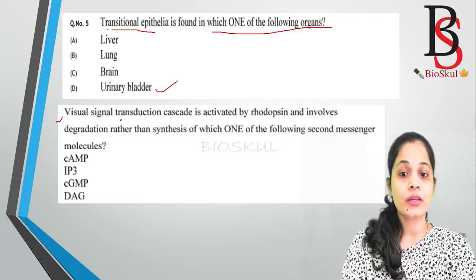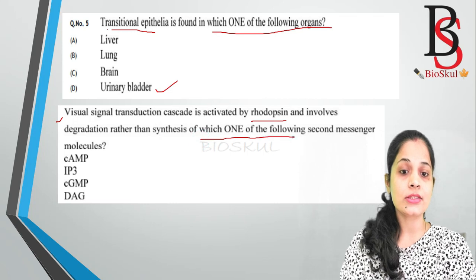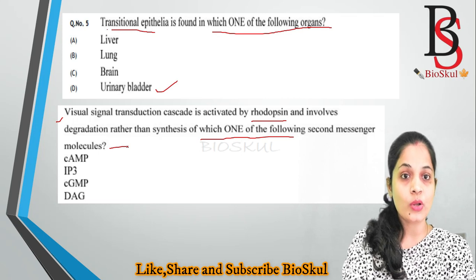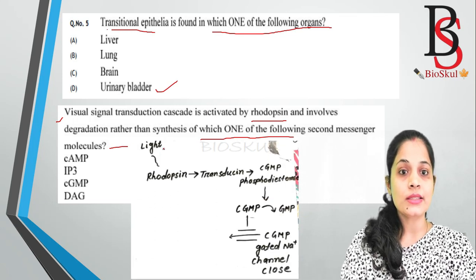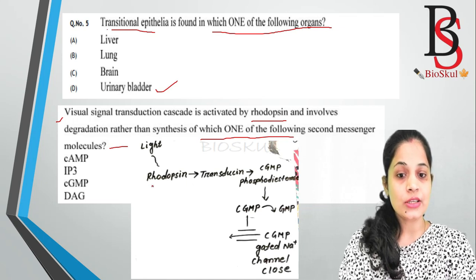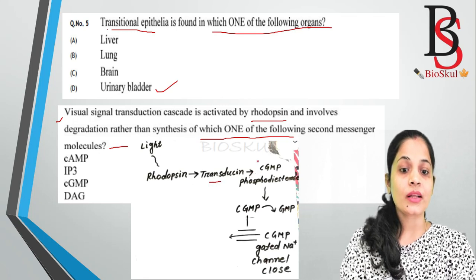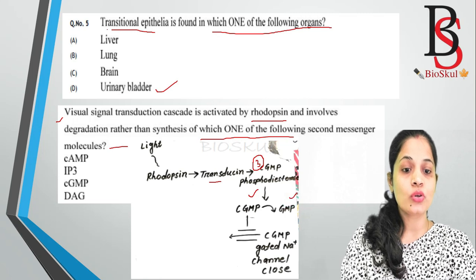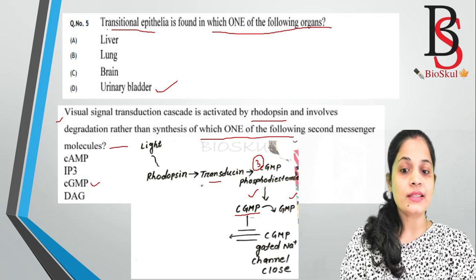Question six: the visual signal transduction cascade is activated by rhodopsin and involves degradation rather than synthesis of which one of the following secondary messenger molecules? When light hits, it causes a conformational change and activation of rhodopsin. Then transducin is activated, converting GDP to GTP, leading to activation of cyclic GMP phosphodiesterase. Cyclic GMP phosphodiesterase converts cyclic GMP to GMP. So cyclic GMP is the secondary messenger that gets degraded. The correct answer is cyclic GMP.